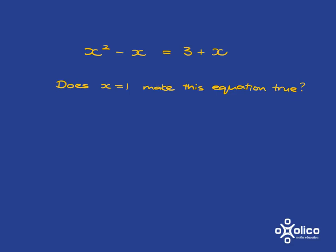Well, let's have a look at the left-hand side, which I'll abbreviate like that. That's going to be 1 squared minus 1, which is 0. And then the right-hand side will be 3 plus 1, when x is equal to 1, which is 4.